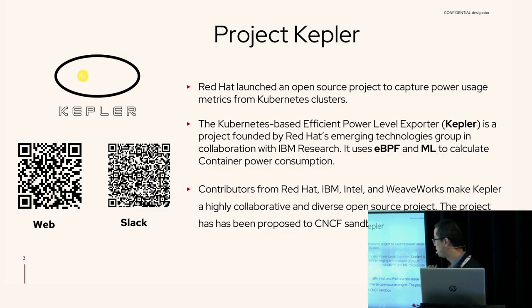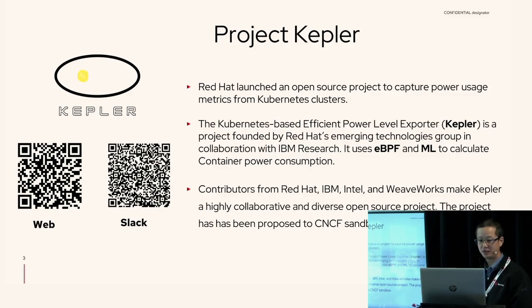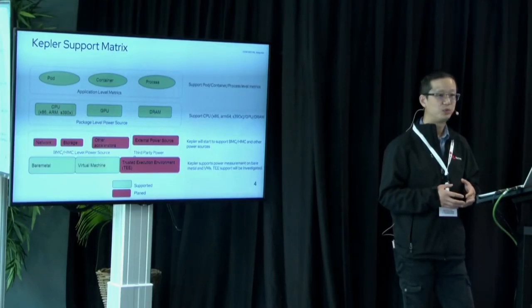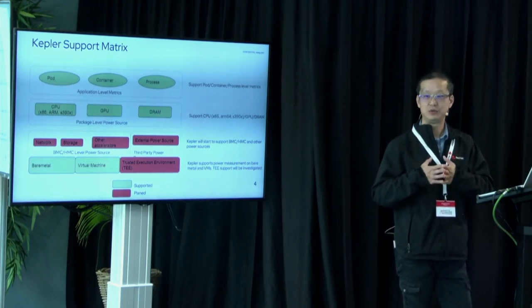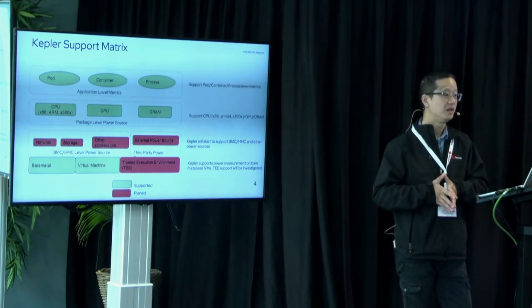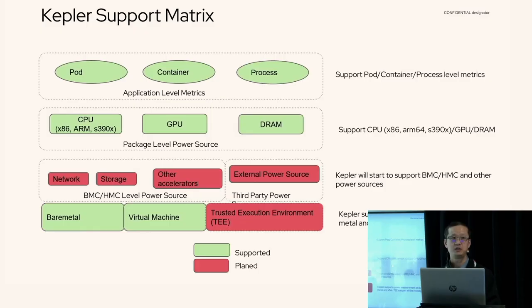If you scan the QR code, there's a website for Kepler and a Slack channel — you're welcome to join the project. Kepler currently supports multiple granularities of energy consumption: we can tell you how much energy is used by your processes, containers, pods, and potentially higher-level APIs. We currently support CPU package level, GPU level, and DRAM level energy consumption.